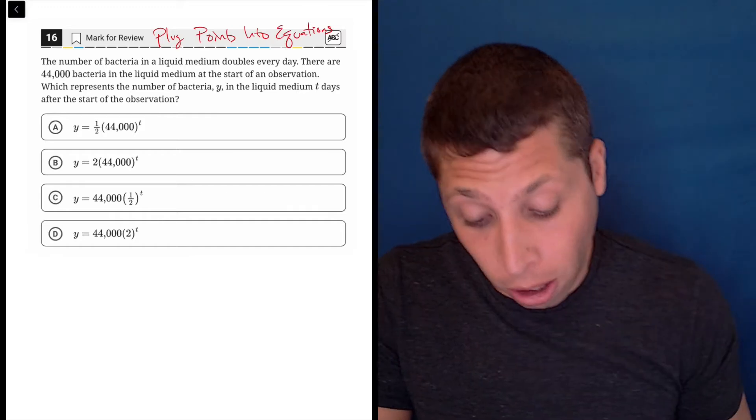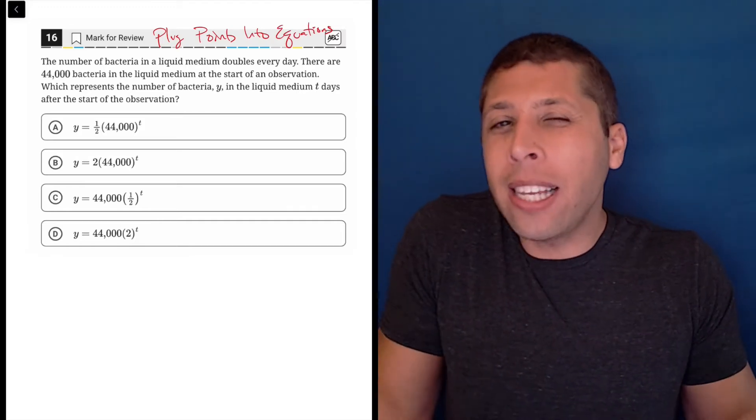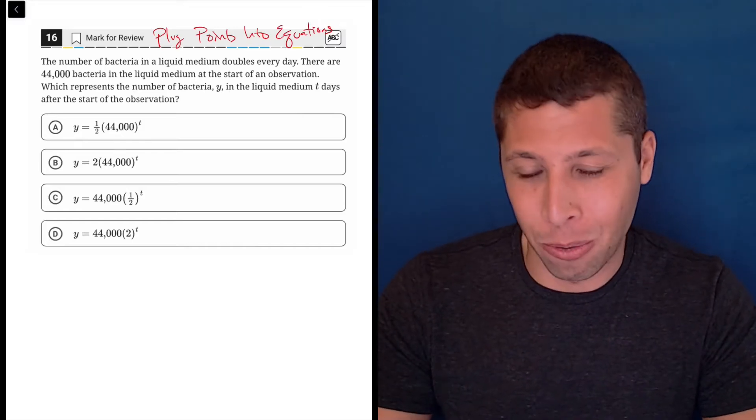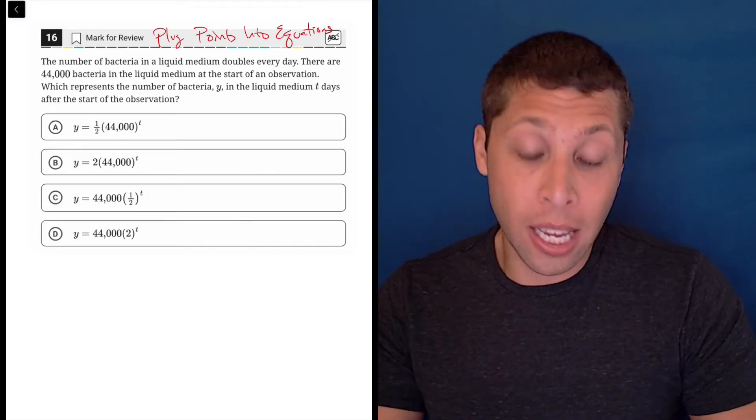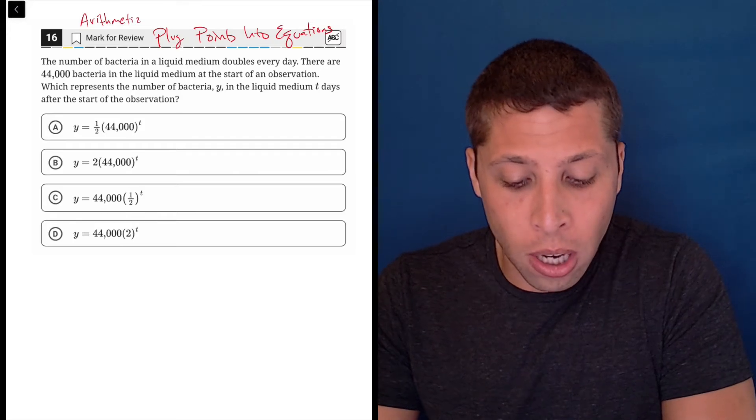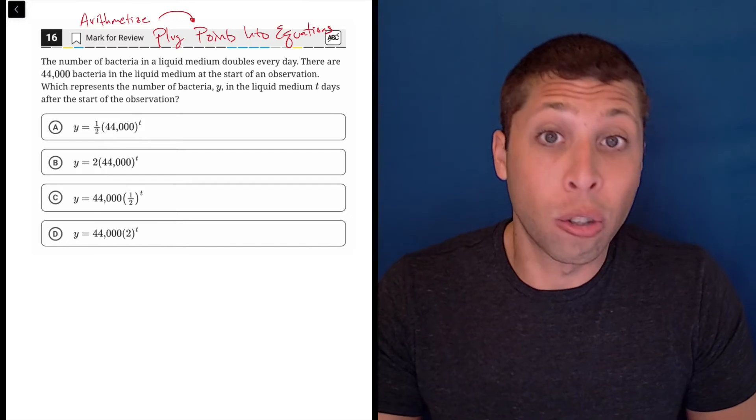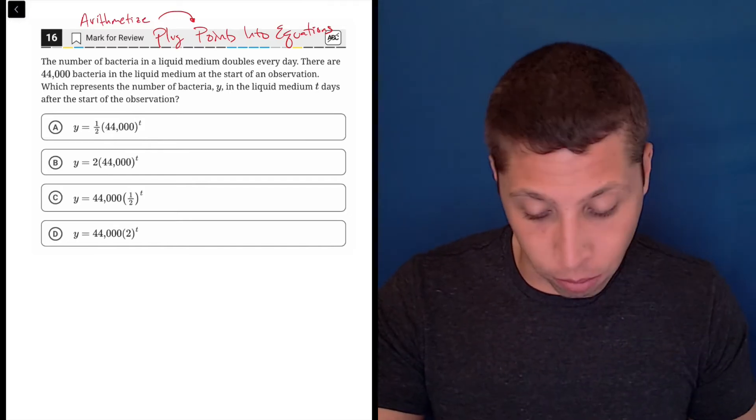Now here it's obvious from the start that we have equations. That's what the answer choices are. But we don't really have points, at least not obvious ones. And maybe this is drifting into the idea of arithmetize where when we don't have values, we make up our own. And we can kind of do that here because the story is so clear about what's happening.